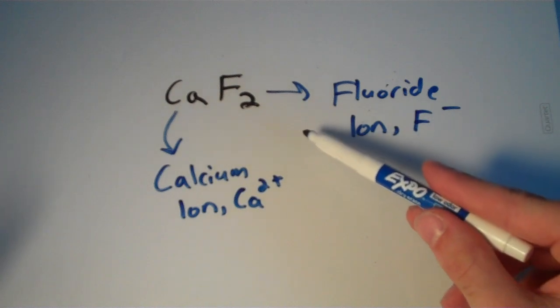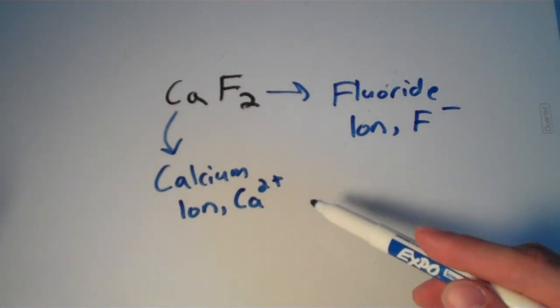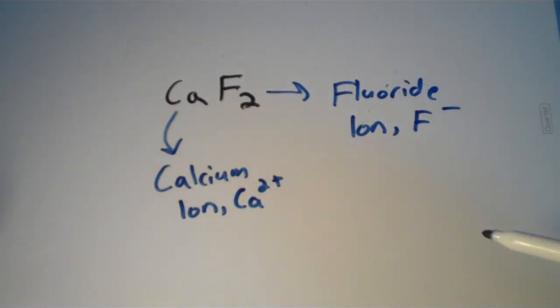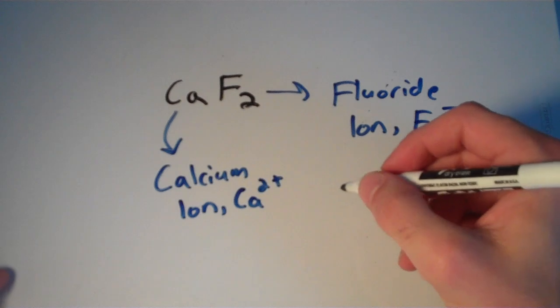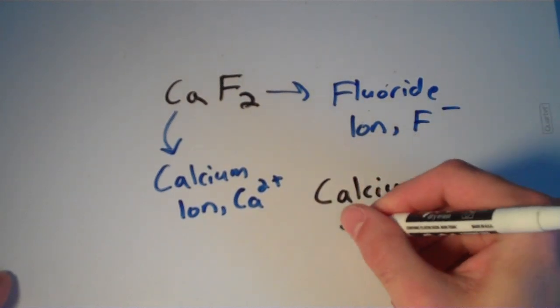In this case we have two fluoride ions at minus one charge apiece that cancel out the one calcium ion that carries a charge of 2+, making this compound overall charge neutral. So it's definitely a valid formula. Calcium ion is our cation. Fluoride ion is our anion. So the name of this is calcium fluoride.